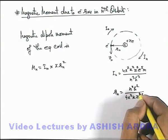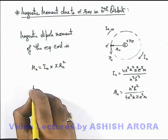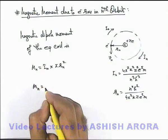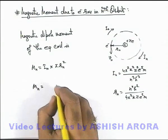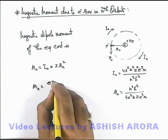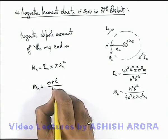I just leave it as an exercise for you to substitute the values. I am just writing down the final simplified value which we'll be getting is e n h over 4 pi m.